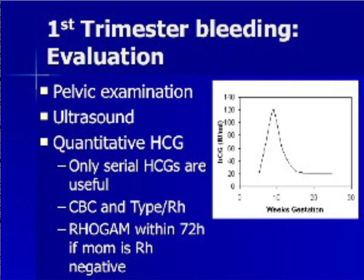A single HCG level is rarely helpful in prognostication. Rather, in the first trimester, most normal pregnancies will have an HCG level that doubles roughly every 48 hours. An HCG level that doubles more slowly than this is indicative of an abnormal pregnancy, either an ectopic or a miscarriage. A CBC and type and RH is also helpful in patients with first trimester bleeding. Women who are RH negative with vaginal bleeding during pregnancy will require RhoGAM therapy to prevent antibody formation to subsequent pregnancies with potentially RH positive fetuses.